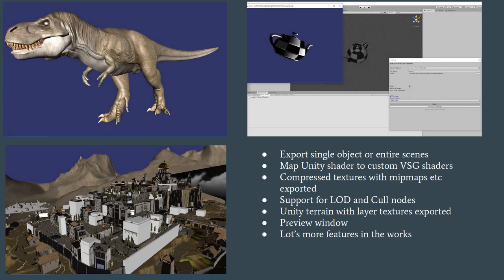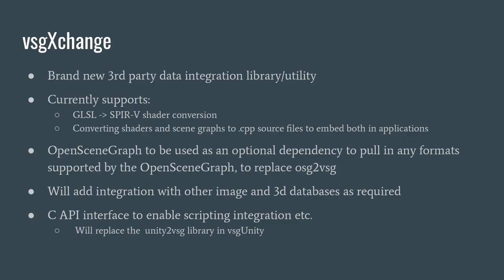With VSG Unity you can export a single object from the Unity editor or an entire scene. You can map Unity shaders across to custom VSG shaders, use compressed textures and mipmapping, support LODs and cull nodes, export terrain with layered textures, and there's a preview window within Unity to see what the rendering looks like on the VSG side. There are lots more features in the works — Thomas Hogarth has been spearheading this side of things.